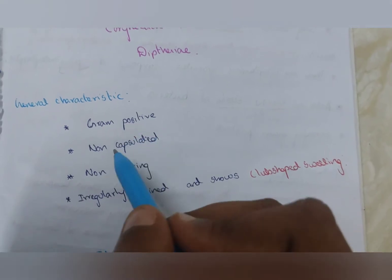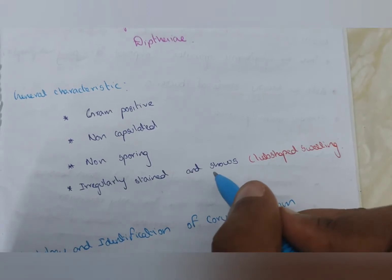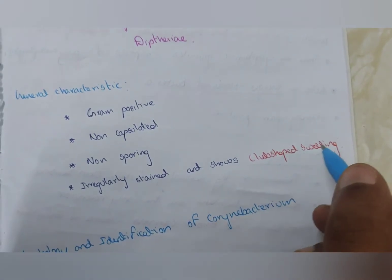It is gram-positive, non-capsulated, non-sporing, irregularly stained and shows club-shaped swelling.